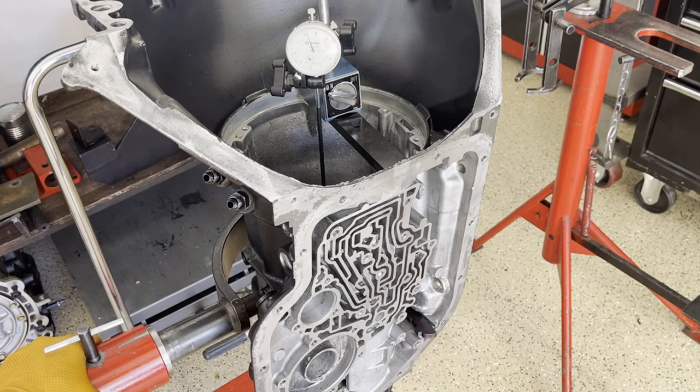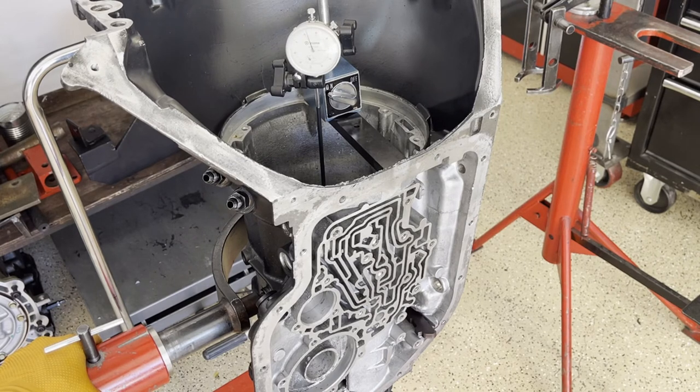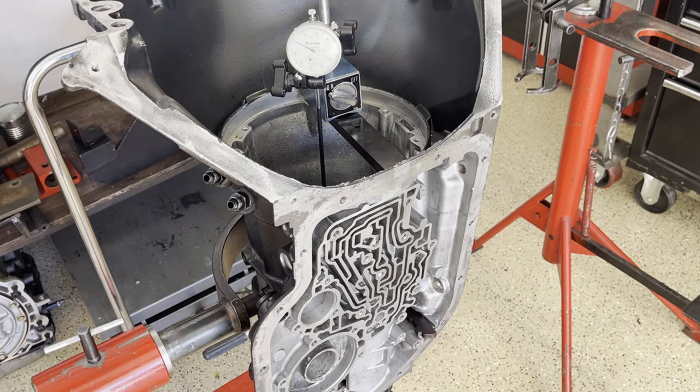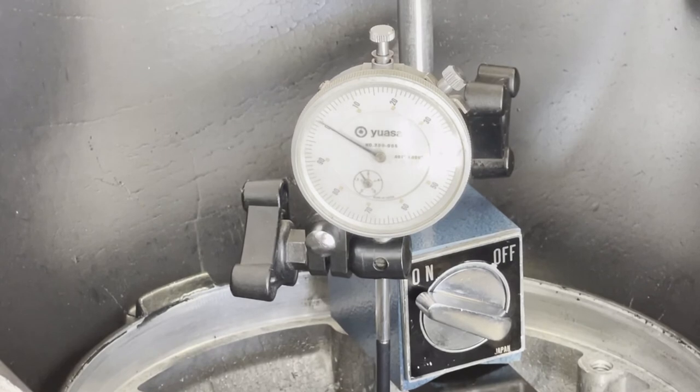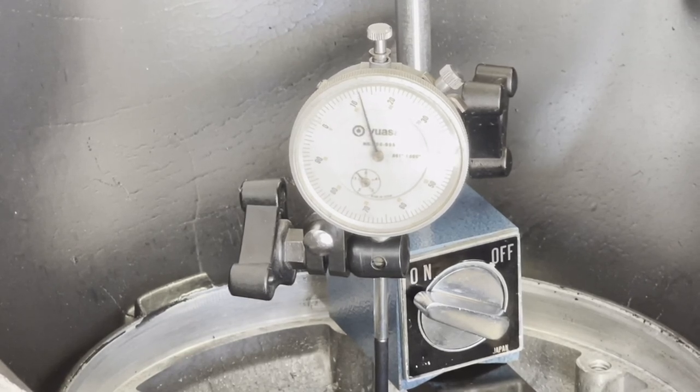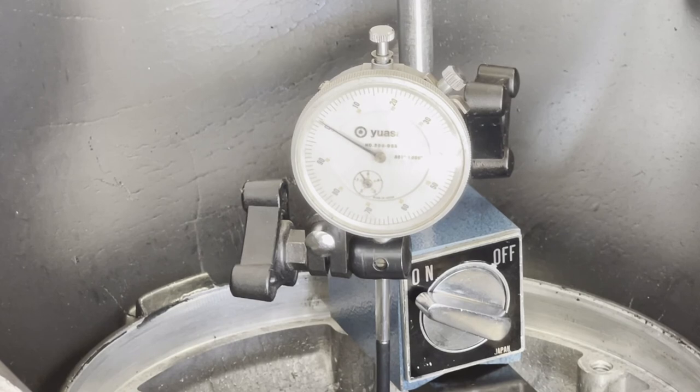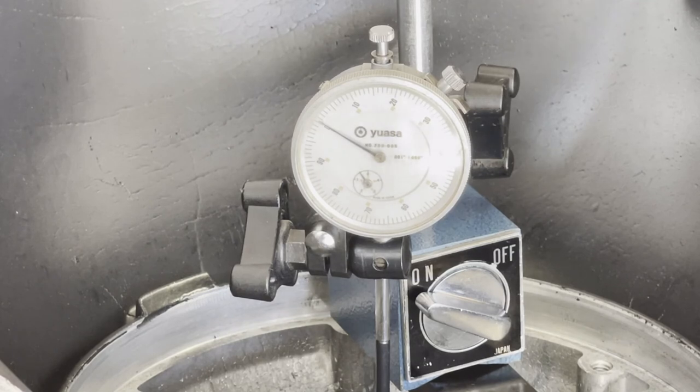It looks like about 12 and a half thousandths. I'm not quite returning to zero, so let me zoom in and get a better view of the indicator itself. It looks like about 11 and a half to 12 thousandths, which is perfect.